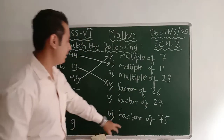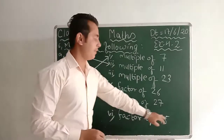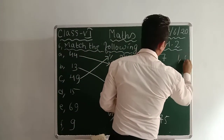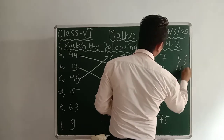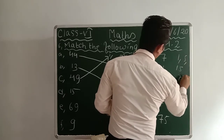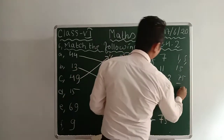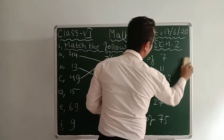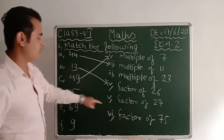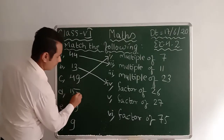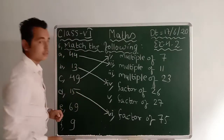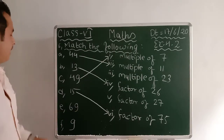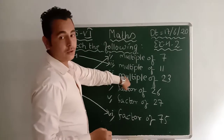Next, 15. It is not a multiple of 23 and it is not a factor of 27. However, it is a factor of 75 because the factors of 75 include 1, 5, 15, and 75. Therefore 15 matches with 'factor of 75.'